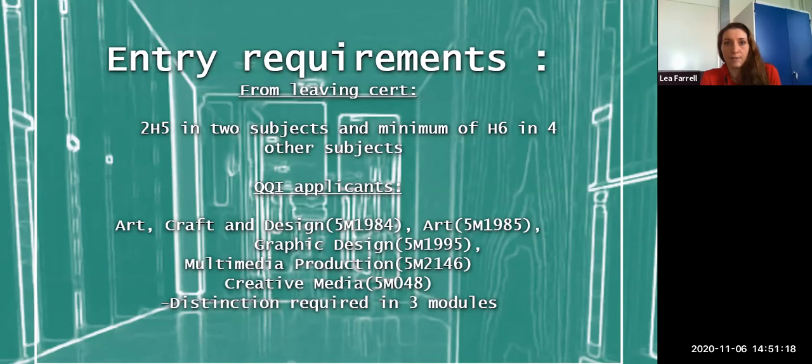QQI applicants, which would be mature applicants or people from QQI courses, must hold one of the following awards: Art, Craft and Design 5M1984, Art 5M1985, Graphic Design 5M1995, Multimedia Production 5M2146 or Creative Media 5M5048. 8 distinctions are required in three modules. This is very important. Other details on the application requirements can be found on AIT's website and of course you can always contact the college if you have any queries.